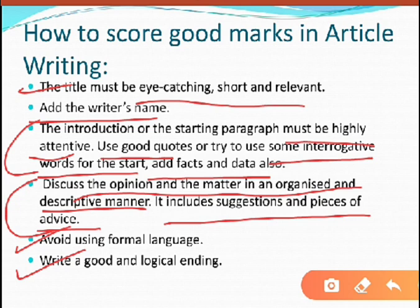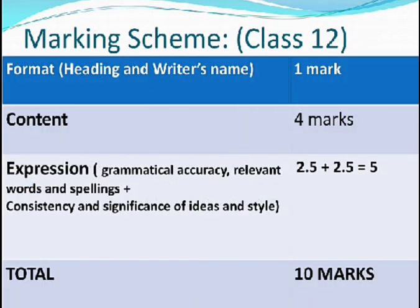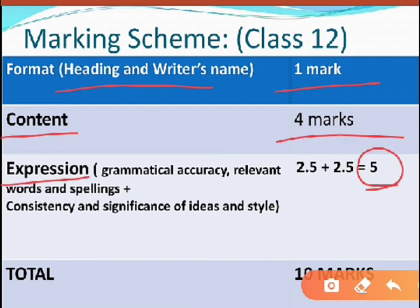Next we will see the marking scheme for Class 12. Heading and writer's name is for 1 mark. Content is for 4 marks. Expression is for 5 marks, which is divided into 2.5 marks for grammatical accuracy, relevant words and spellings, and 2.5 marks for coherence, consistency, and significance of ideas. This totals to 10 marks.